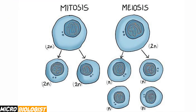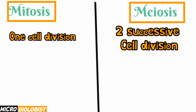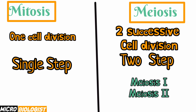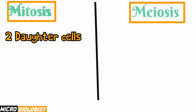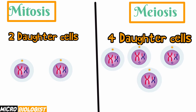Now let's move ahead to the other differences. Have a look at these images — observing them, we can easily notice the differences between the two. The first difference: mitosis involves only one cell division, while meiosis involves two successive cell divisions. Mitosis is a single-step division while meiosis is a two-step division, with two phases: meiosis one and meiosis two. Second, mitosis produces two daughter cells while meiosis produces four daughter cells.